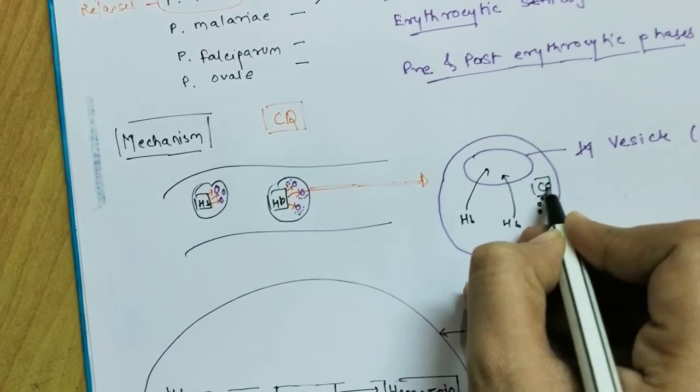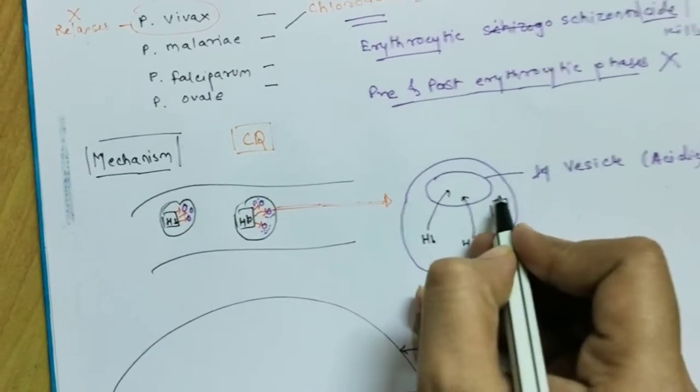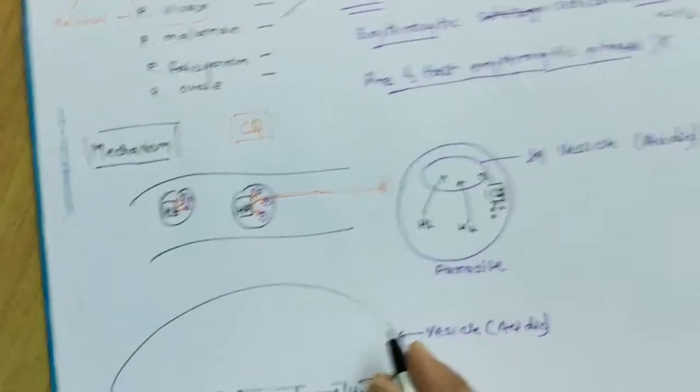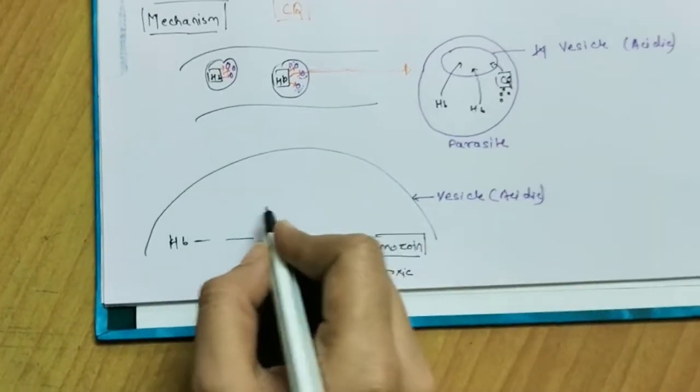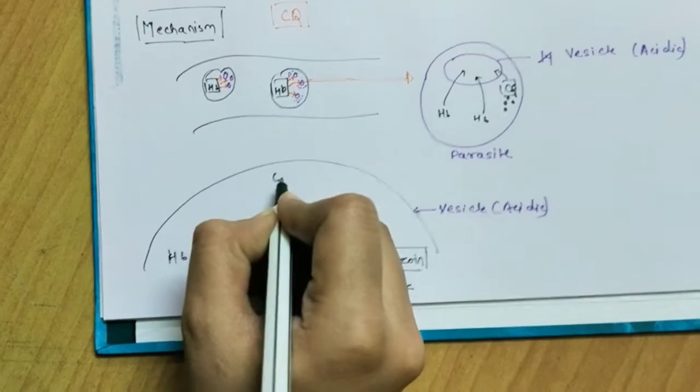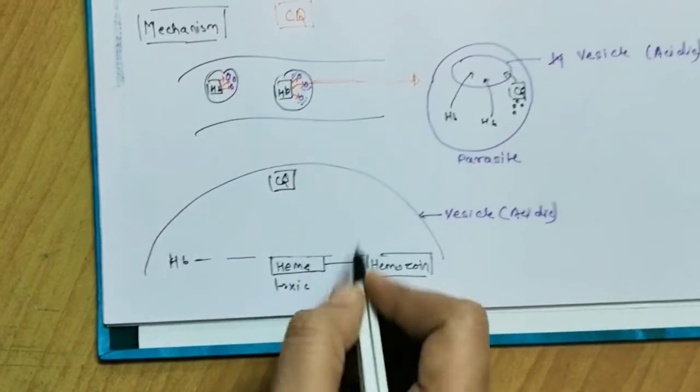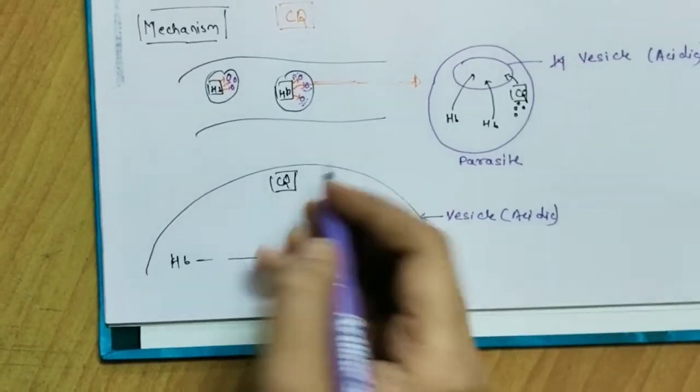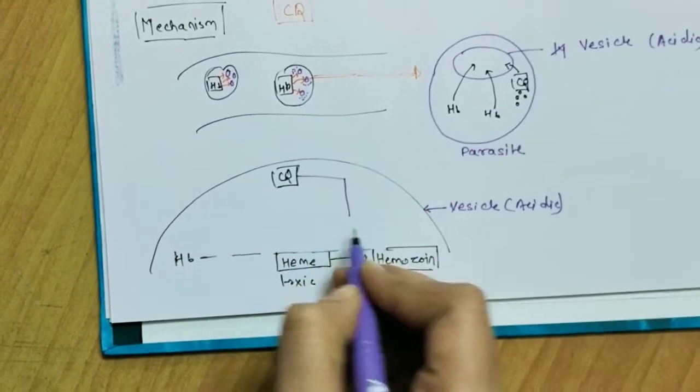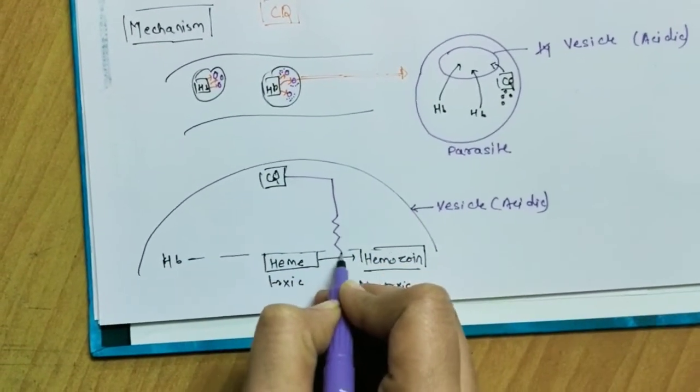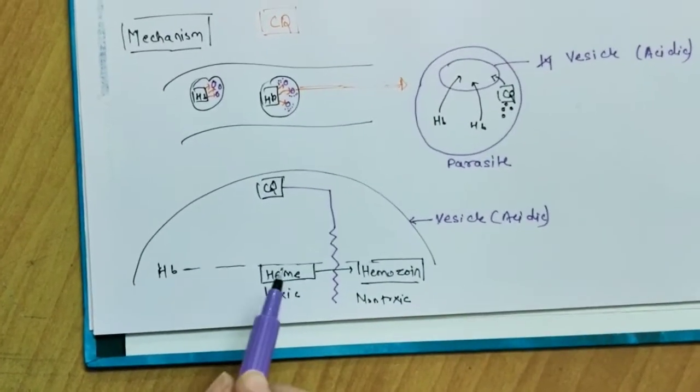So here the chloroquine enters the parasite and it also gets accumulated inside the vesicle of the parasite. It enters the vesicle also, and here it comes in the vesicle and it actually interferes. And being slightly basic, it raises the pH of the vesicle and it actually interferes with the degradation of hemoglobin. It stops the conversion of heme into the hemozoin.